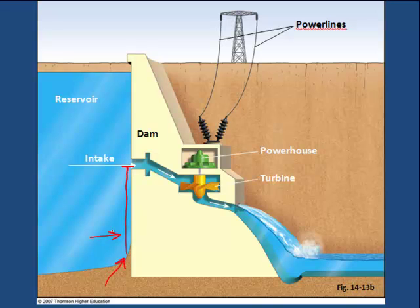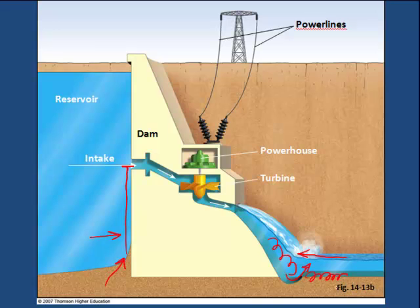That sediment carries nutrients necessary for downstream habitats, so its restriction can be a concern. As far as animals moving upstream, they often get stopped because the water is very turbulent and is scouring the bottom, which can be a problem for dam stability. Any animals not used to that kind of energy on the bottom will no longer live in the spillway area below the dam.